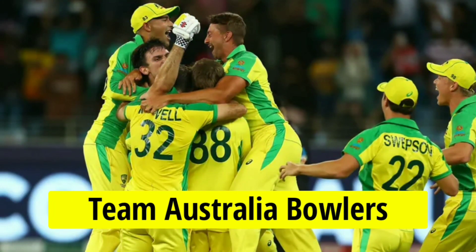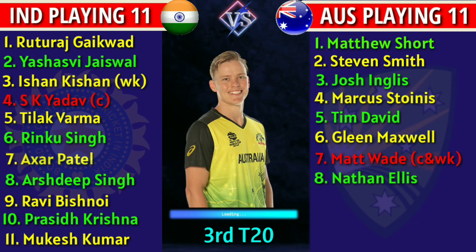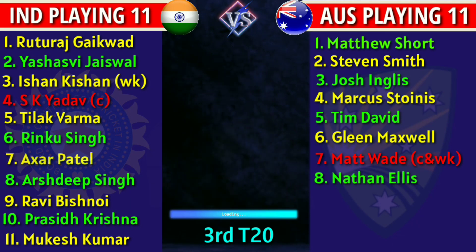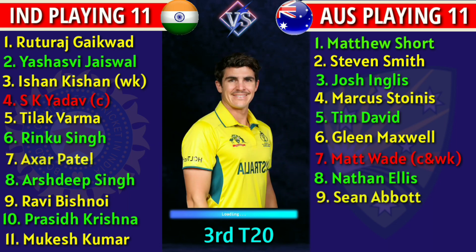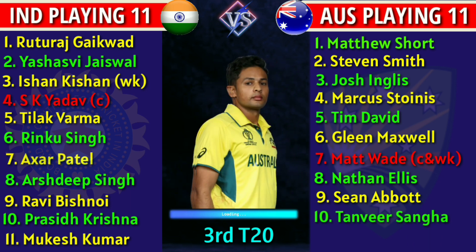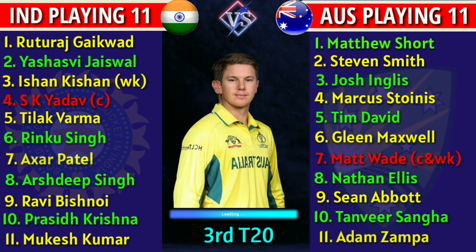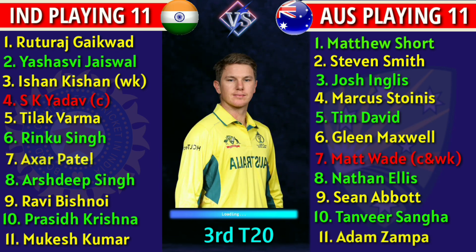Australia team bowlers: 8. Nathan Ellis, right-arm fast bowler. 9. Sean Abbott, right-arm fast bowler. 10. Tanvir Sangha, right-arm spin bowler. 11. Adam Zampa, right-arm spin bowler.